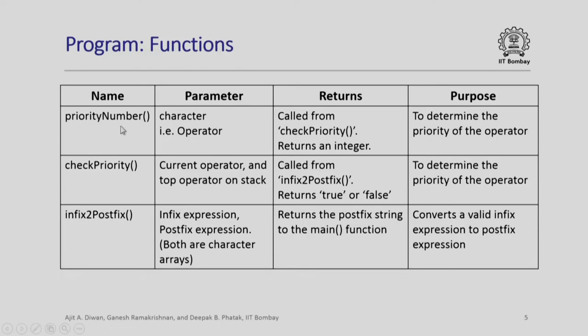The priority_number function is an artificial number allocated to every operator encountered. The parameter is a character which is an operator and it determines the priority. The numbers assigned are: 0 for the highest priority operator raise-to, 1 for multiplication or division, 2 for addition or subtraction. The check_priority function compares the current operator and the top operator on the stack, returning true or false depending on which has higher priority.